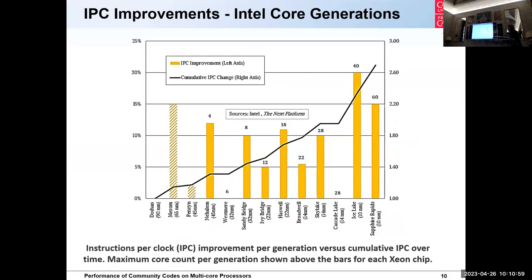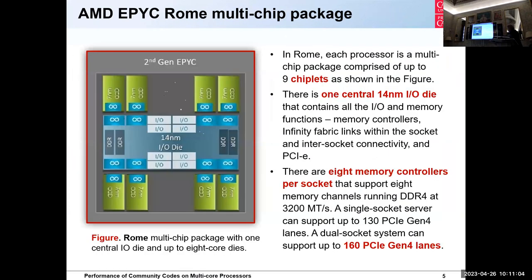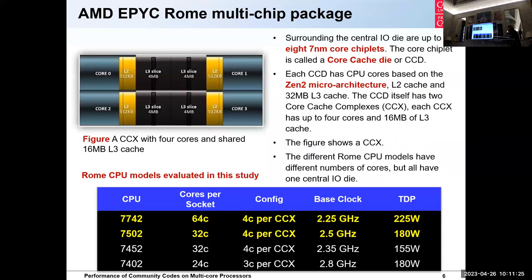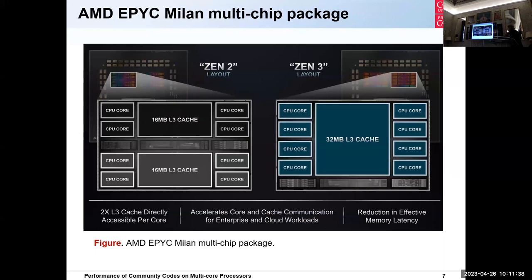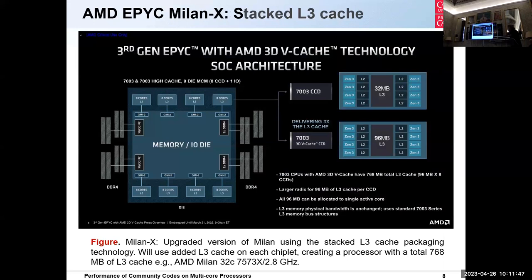Going from EPYC Rome — where Naples was a warm-up but Rome with its nine chiplets and central 40nm I/O die was a really positive step — there's a significant improvement moving from Zen 2 (AMD Rome) to Milan (Zen 3). Then some really neat stuff with stacked L3 cache, providing a total of 768 MB of L3 cache on the so-called X series of Milan. We have some numbers in this presentation that show that.